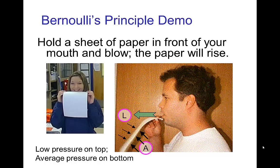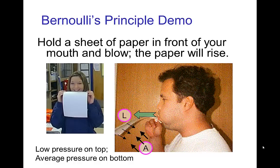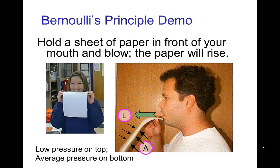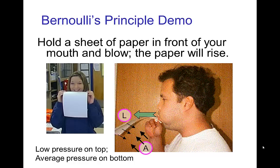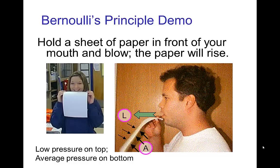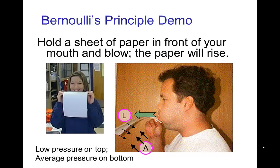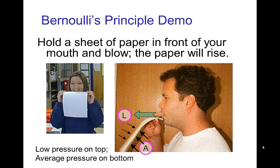There's a very simple demo you should try: take a sheet of paper and blow over the top, and you'll see that the paper rises. When you blow over the top, the air moves faster there, which lowers the pressure. Since the bottom side remains at atmospheric pressure, there's a pressure difference and a net upward force which lifts the sheet of paper.